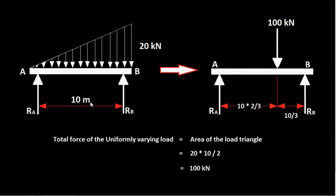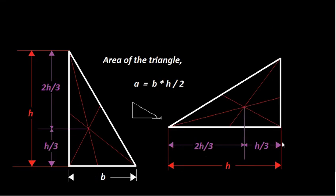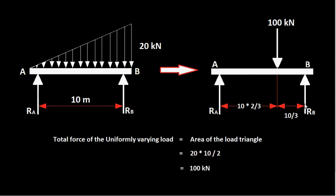Because 10 is the height of the triangle, the center of gravity is H/3 from the base (point B) and 2H/3 from the apex (point A). So the equivalent force system is a 100 kN point load acting at 10/3 from point B and 20/3 from point A.